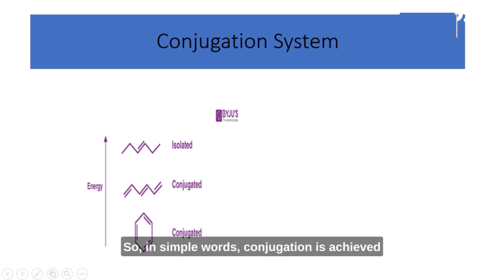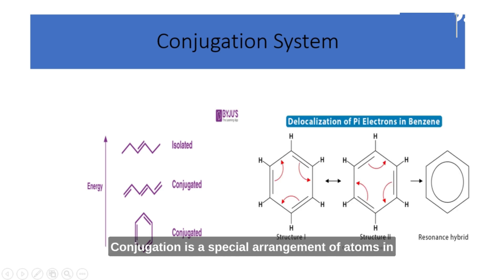So, in simple words, conjugation is achieved by alternating single and double bonds. Conjugation is a special arrangement of atoms in a molecule that allows the electrons to move around and share their energy more easily.